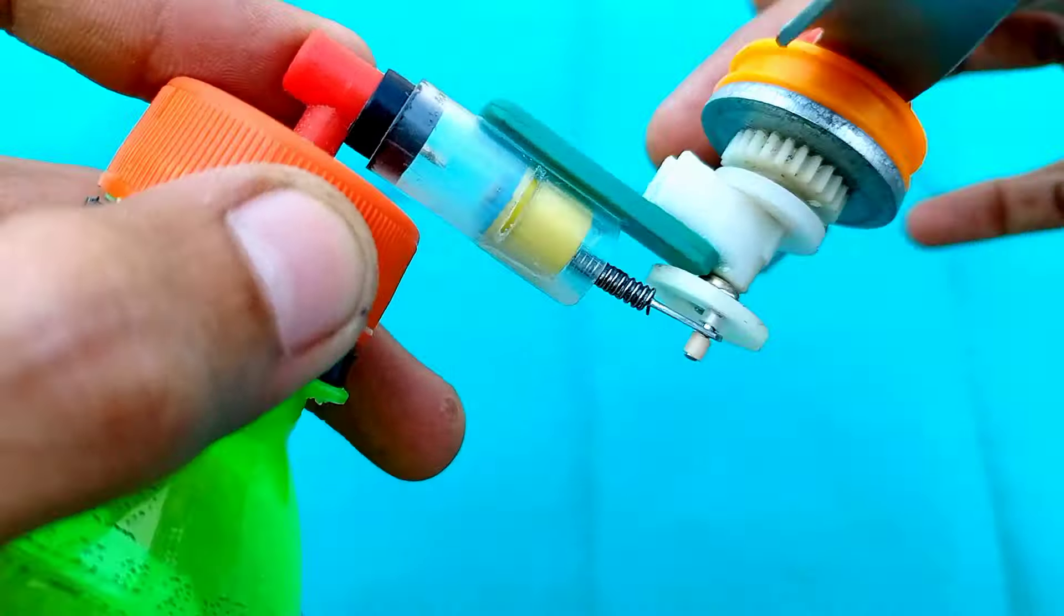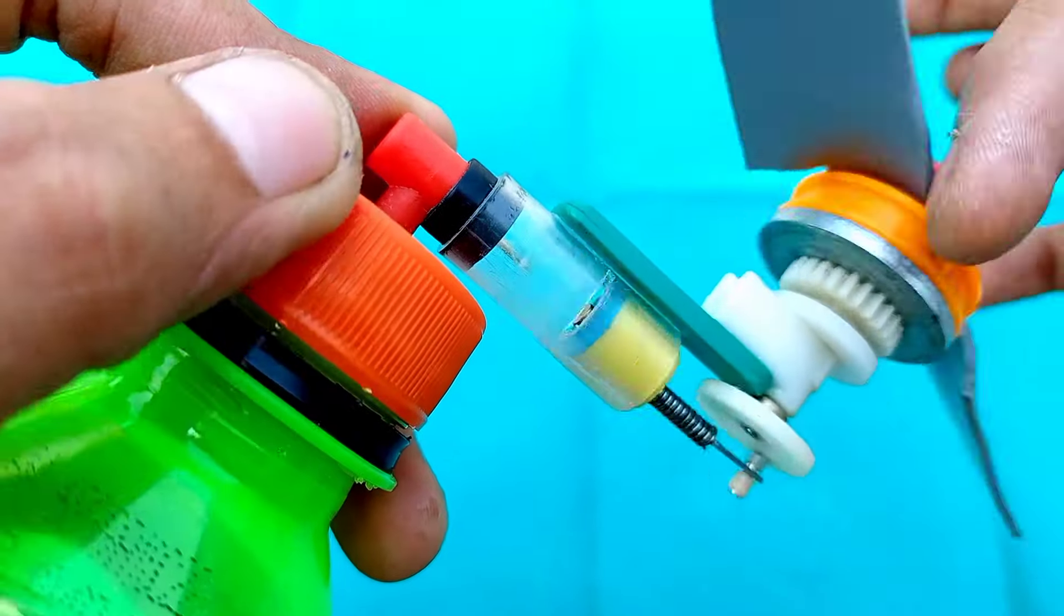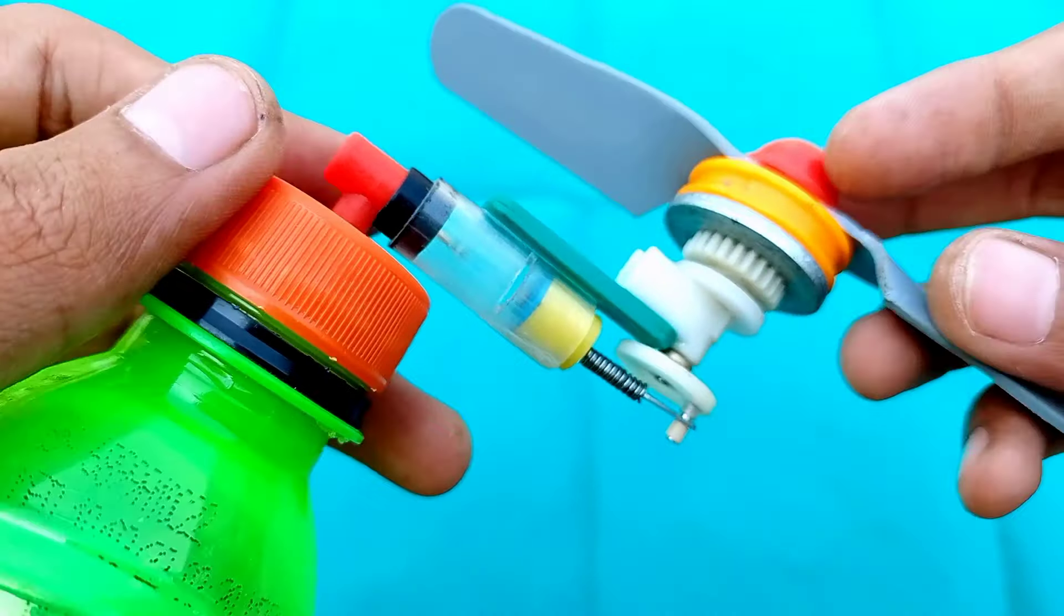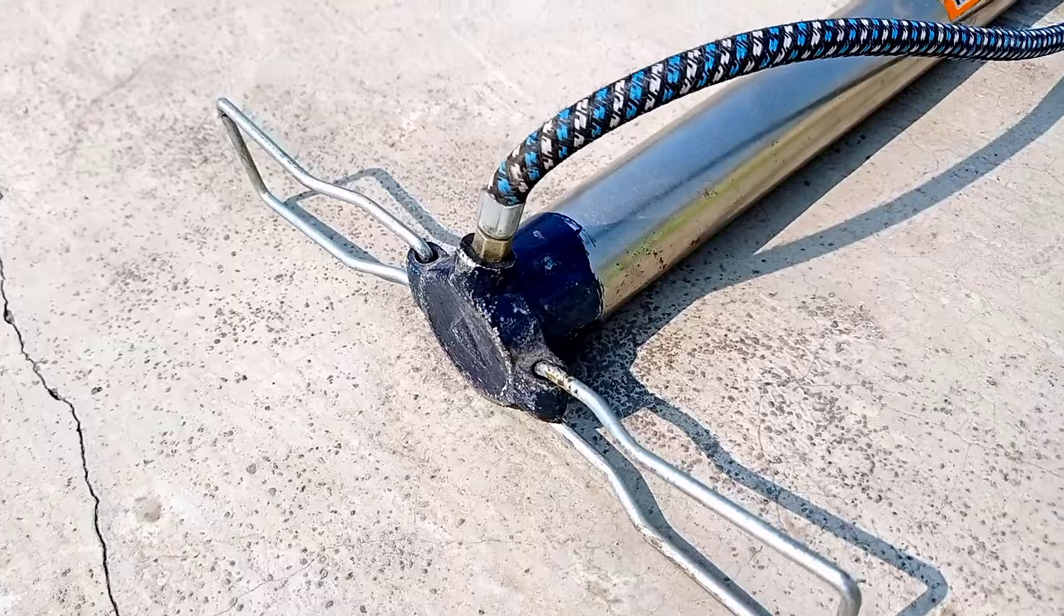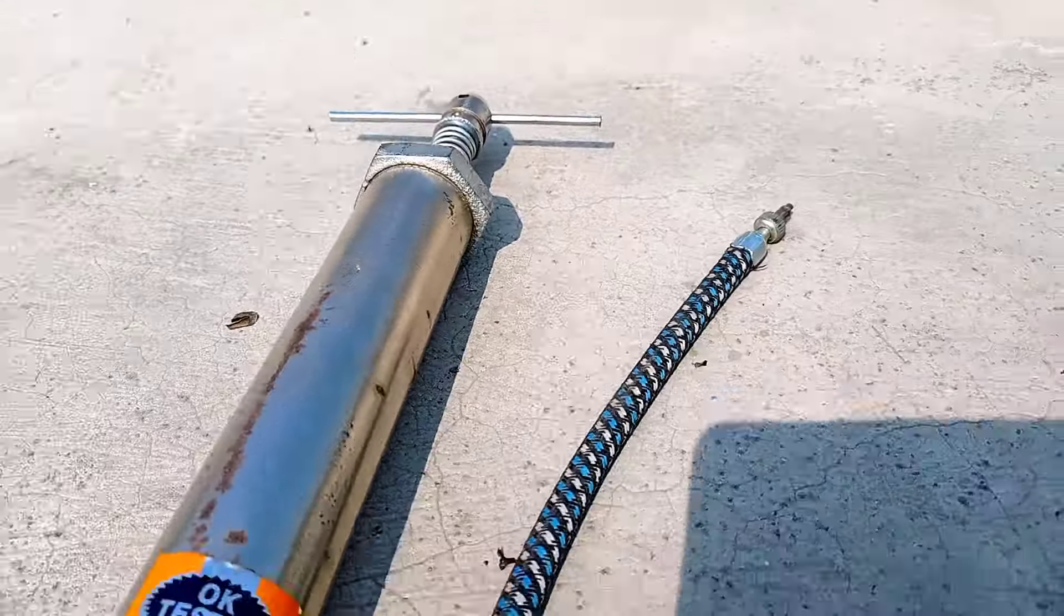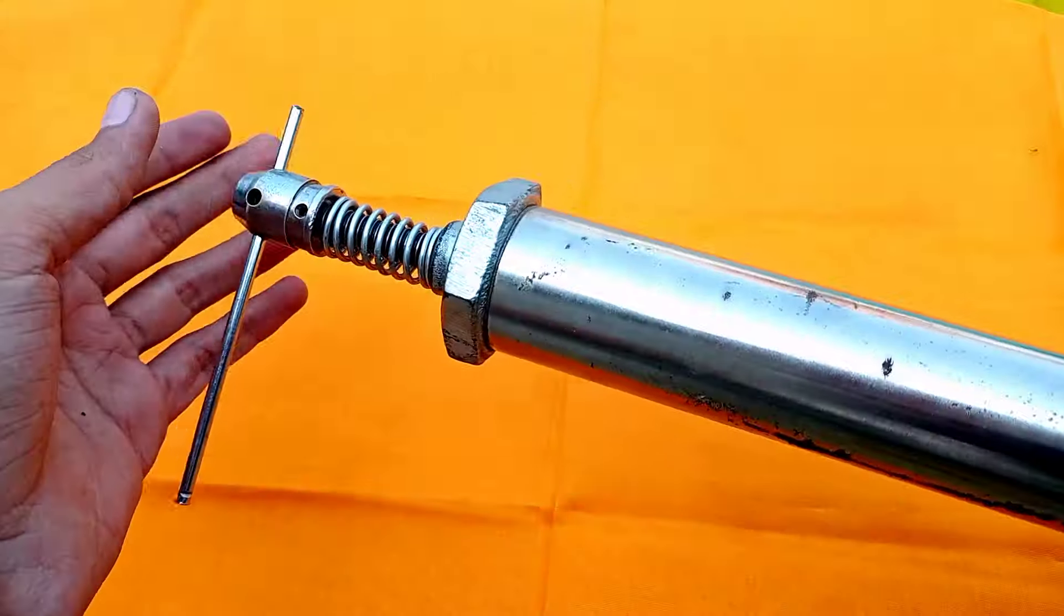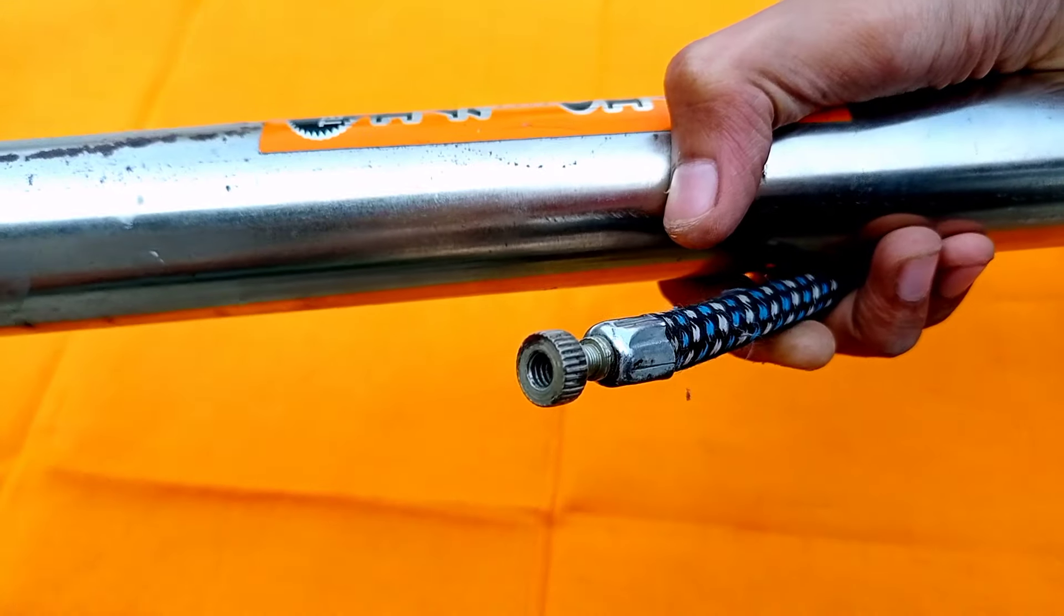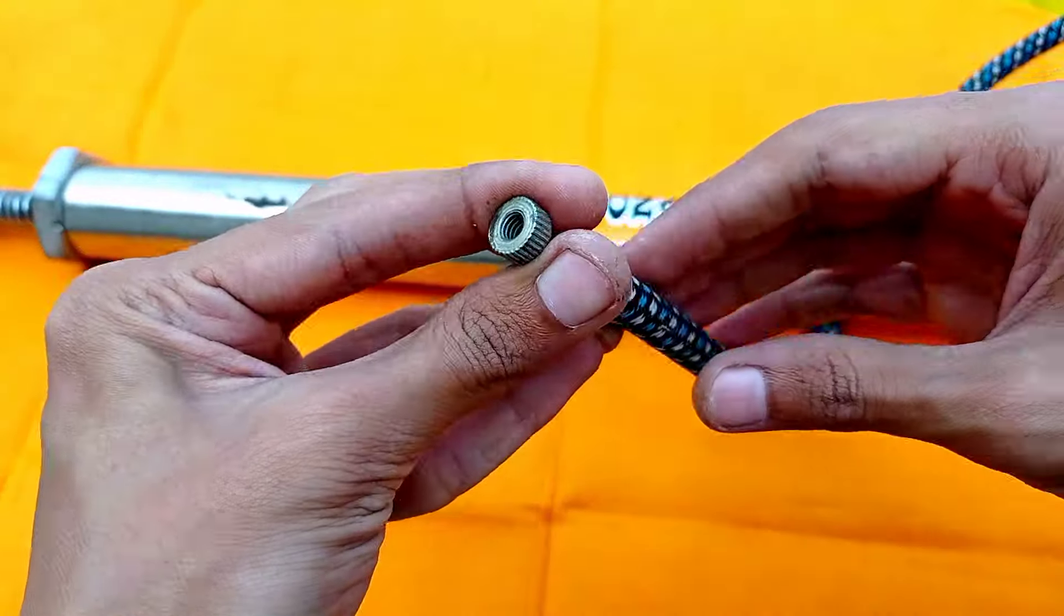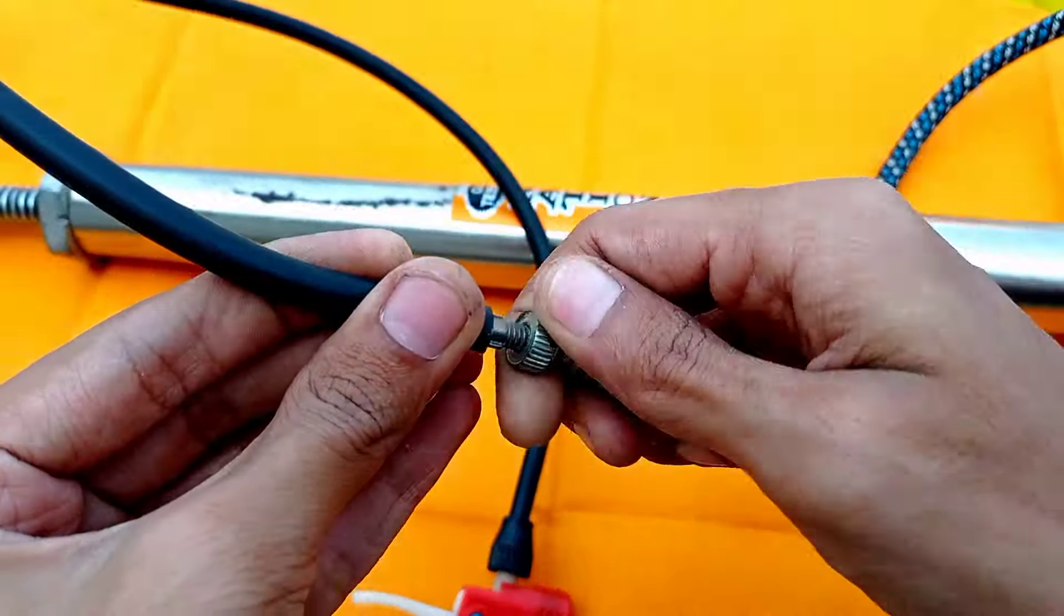If I have a 3D printer or resin printer, then it is very easy to make this type of engine. I use this bicycle pump to compress air. Let's pump some air inside the plastic bottle, but this pump has a different nozzle and my bottle has a different nozzle.